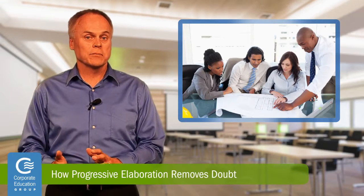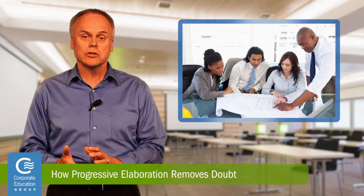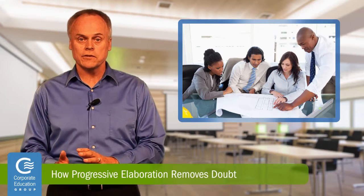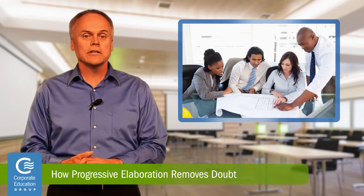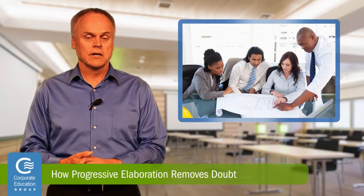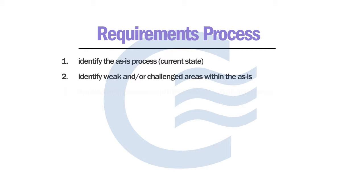For an example of a process improvement project, the team could break down its requirements process of elicit, document, and review for each of the following areas. First, identify the as-is process or the current state. Second, identify weak areas and or challenged areas within the as-is process.